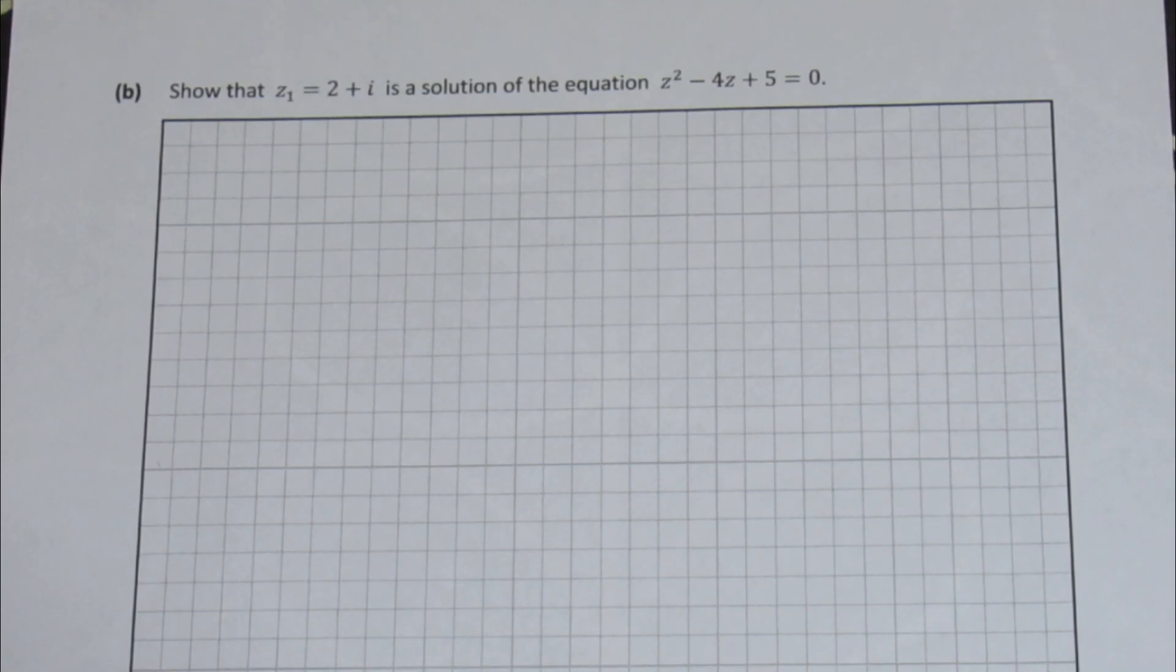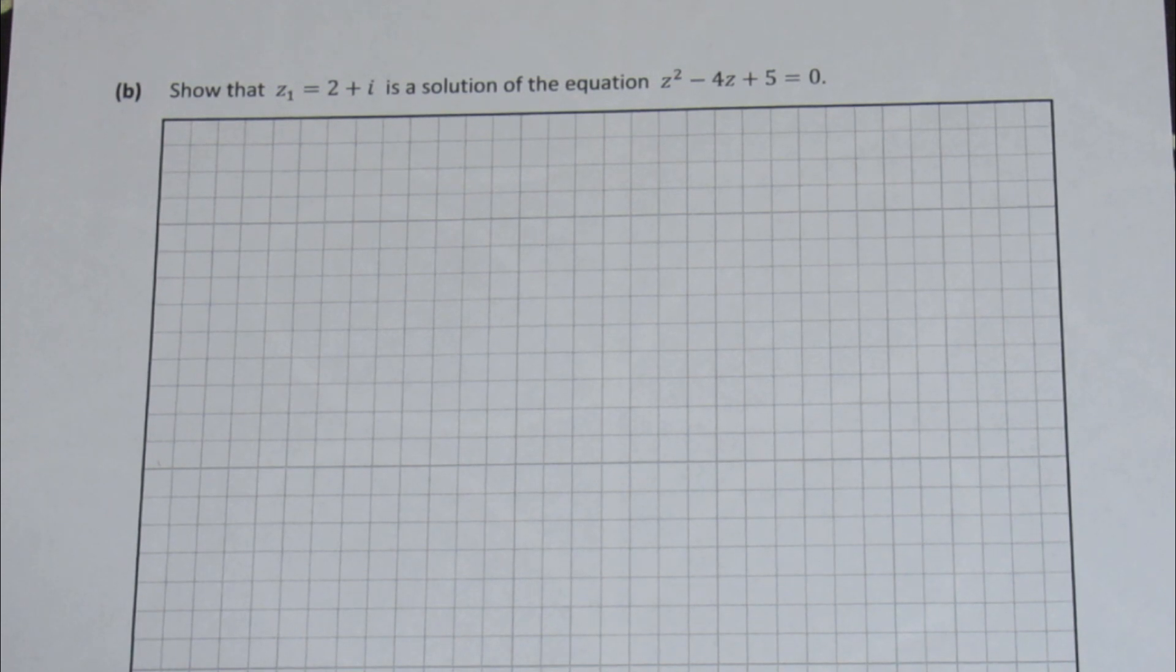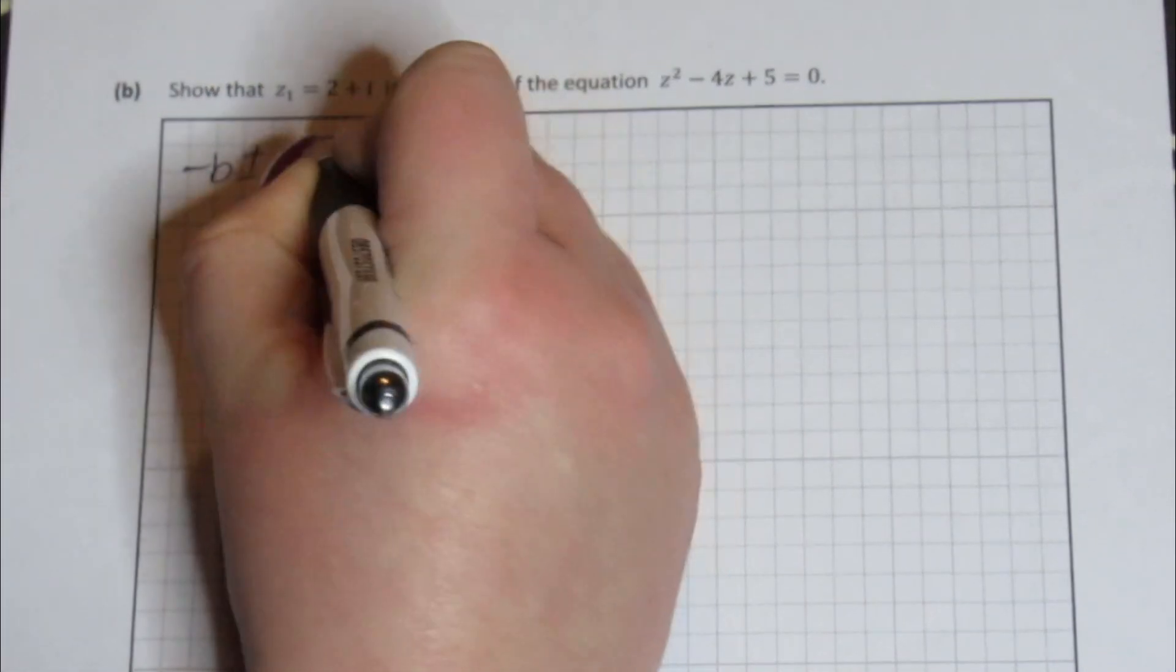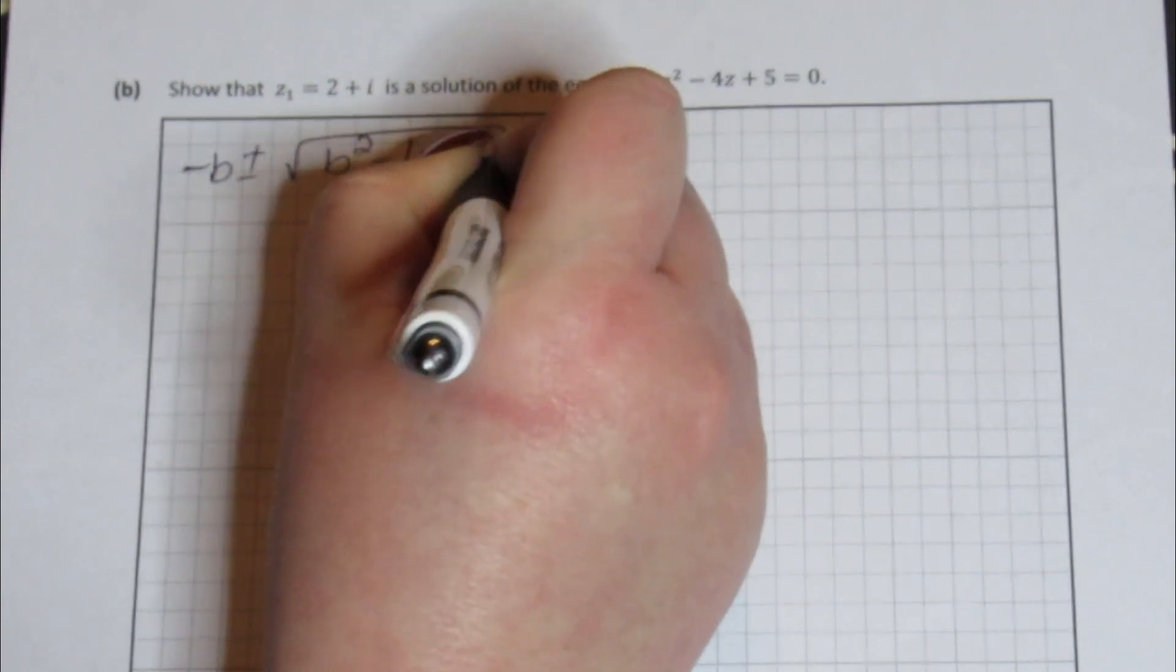This is part B. This is the last part of this question altogether and it says show that Z1 is a solution to the equation z squared minus 4z plus 5 equals 0. There's no need to panic here. What you need to realize is if that z squared minus 4z plus 5 was just a normal equation with x's in it, you wouldn't hesitate to use the minus b formula to find its solutions. So that's exactly what we're going to do and we're literally going to show that when we use the minus b formula on this equation, we're going to get 2 plus i.